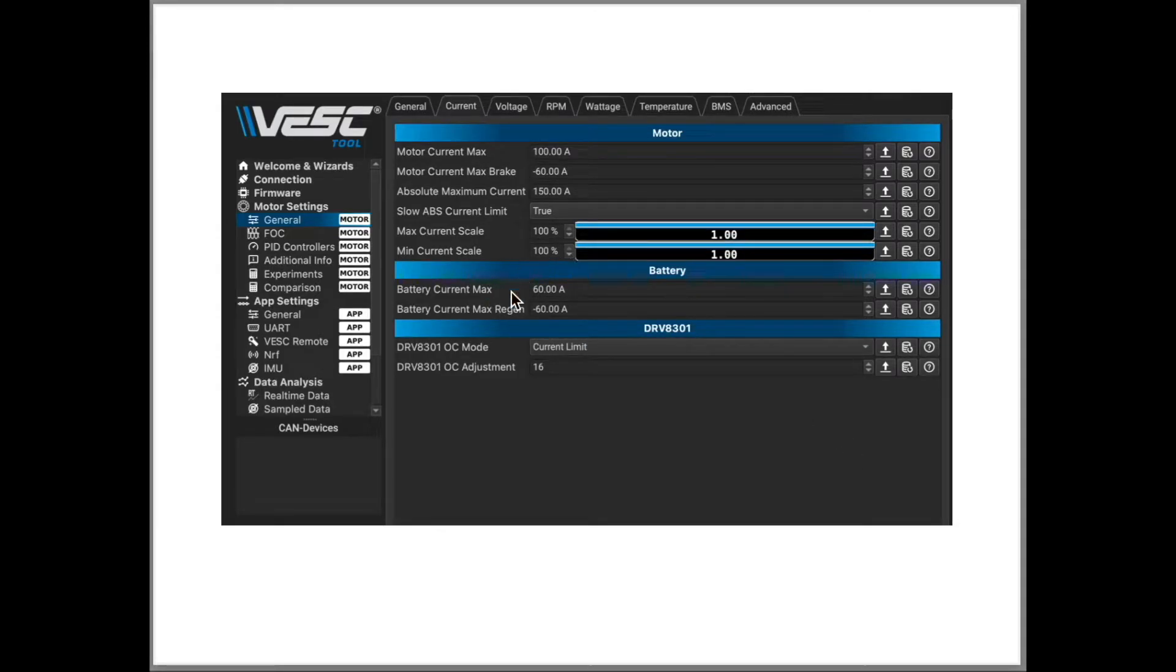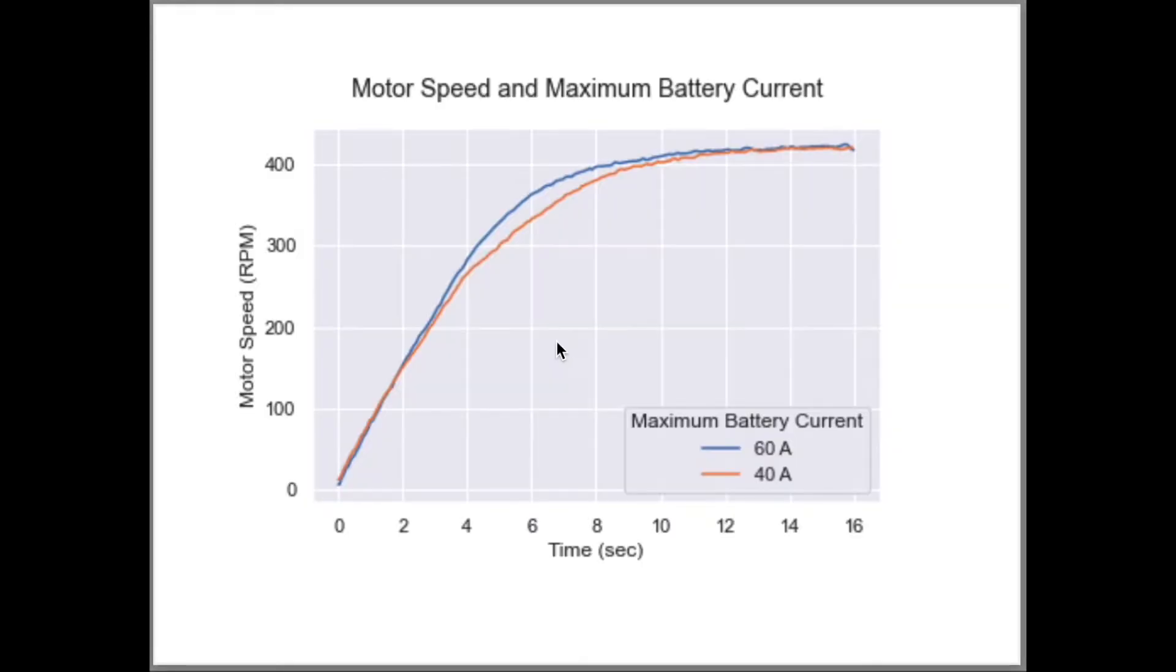This video shows how changing the maximum battery current limit setting in VESC tool affects the speed and acceleration of an electric vehicle.